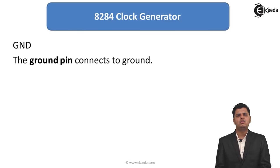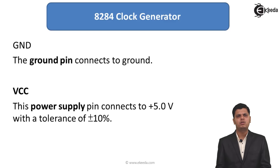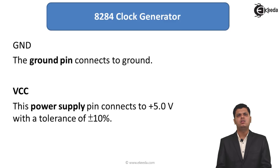Lastly, the two supply pins: GND, which is the ground pin connected to 0 volts, and VCC, the power supply pin connected to plus 5 volts with a tolerance of plus or minus 10 percent. In this lecture we have seen the 8284 clock generator and its pin configuration in detail.